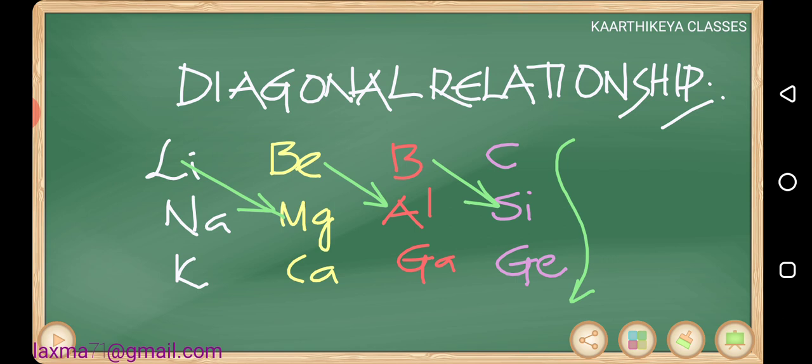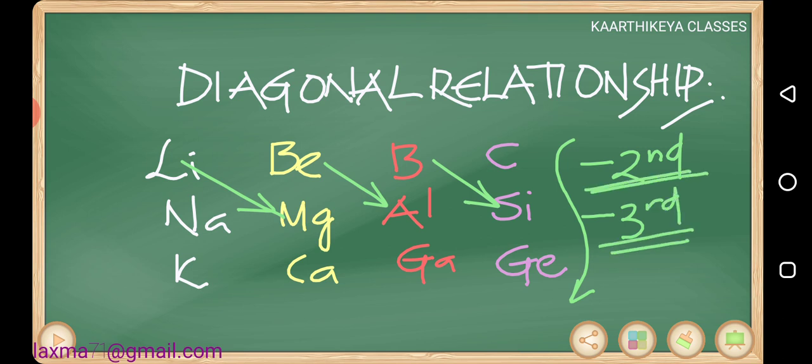Diagonal relation is generally shown by second period elements and third period elements. Between the first and second groups — that is lithium and magnesium. Between second and third — beryllium and aluminium. Between third and fourth — boron and silicon. There are some similarities. This is called a diagonal relation; according to your mathematics, they are diagonally related.